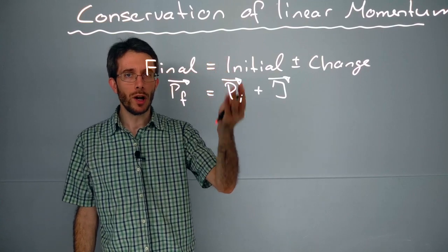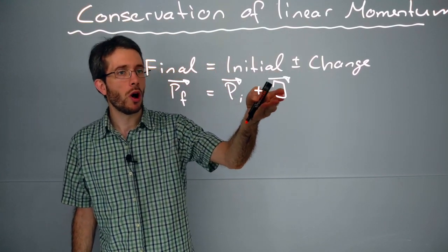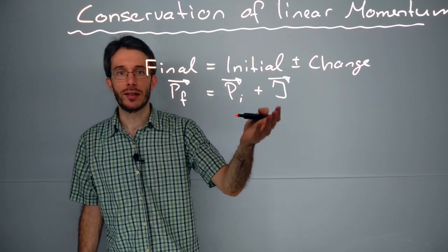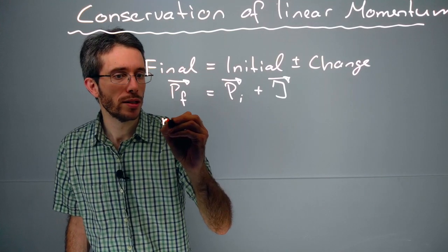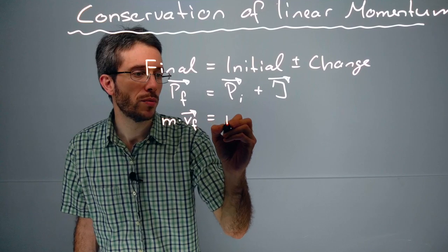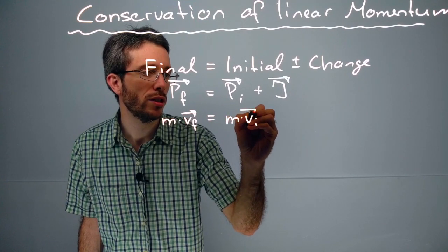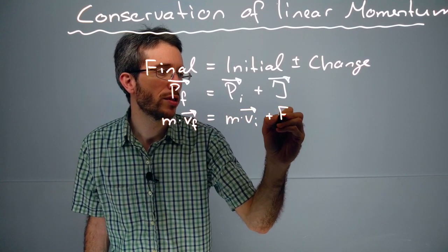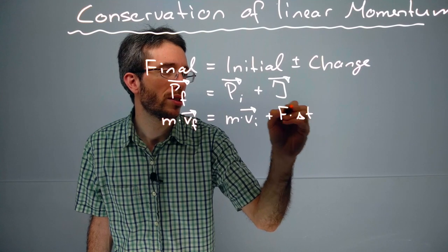So if you only have one object on which some impulse is applied, this will translate into mass times velocity final is mass times velocity initial plus force times time.